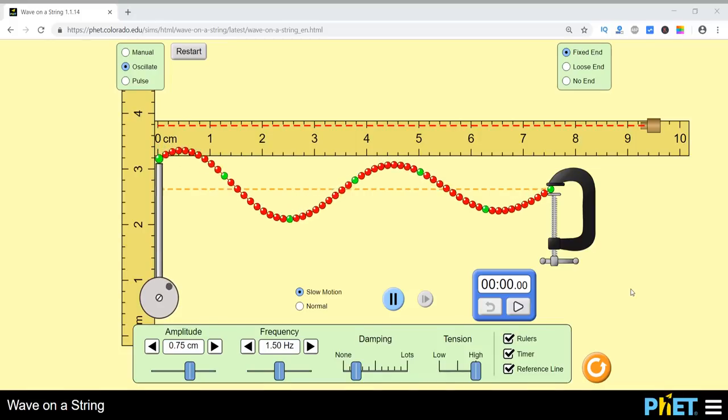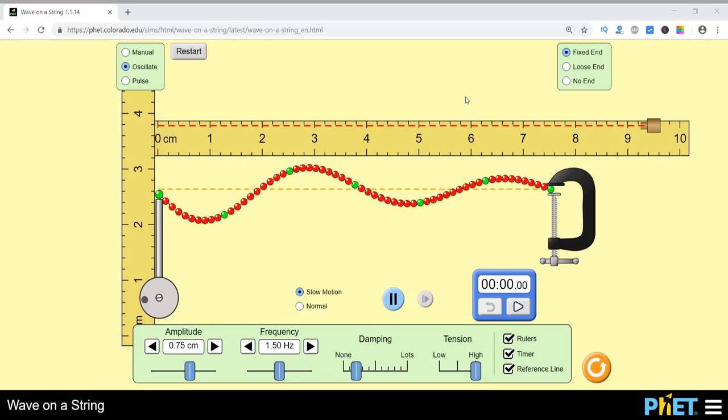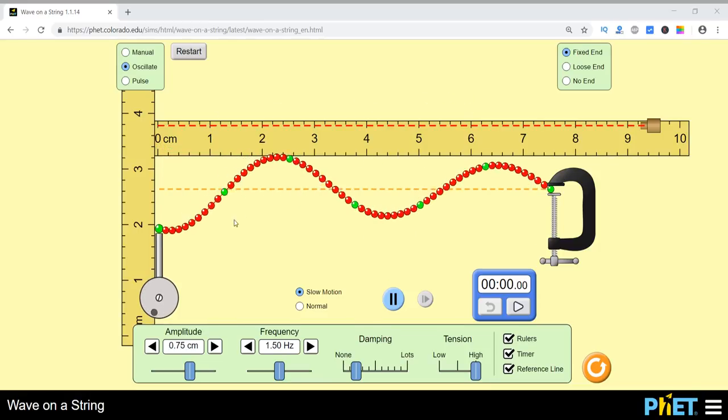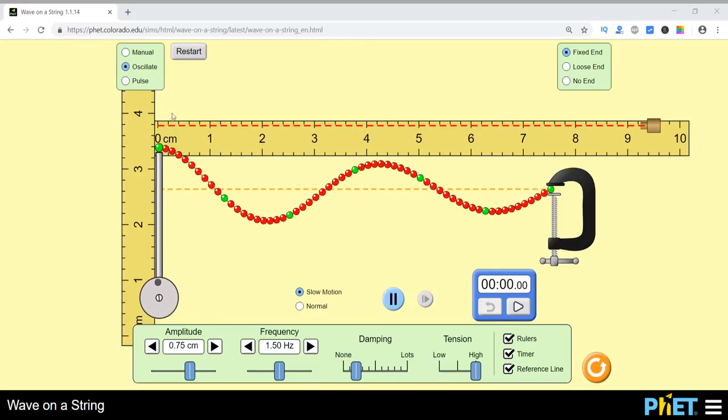Here we will see how a wave propagates on a string. We will change various parameters of this experiment and see how it affects the motion of wave on a string. So let's do it.